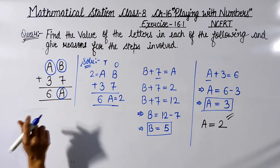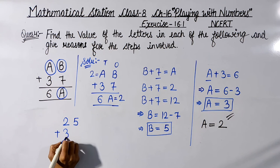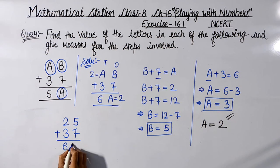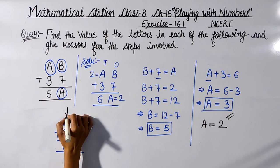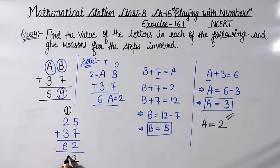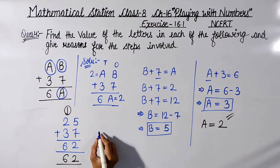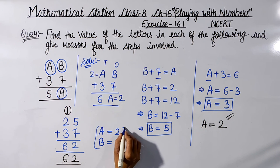Substituting A = 2 and B = 5: 25 + 37. Ones column: 5 + 7 = 12, write 2 carry 1. Tens column: 2 + 3 = 5, plus carry 1 = 6. Answer is 62, which exactly matches the question's answer 6A = 62. So the possible value of A is 2 and B is 5.